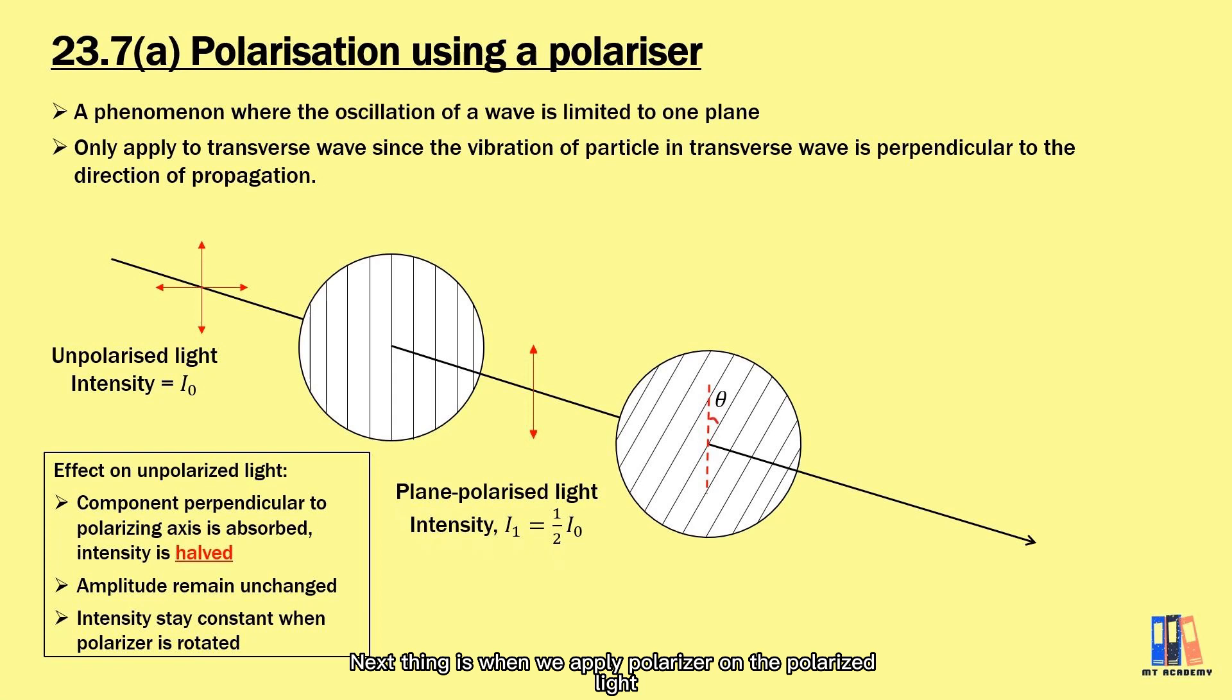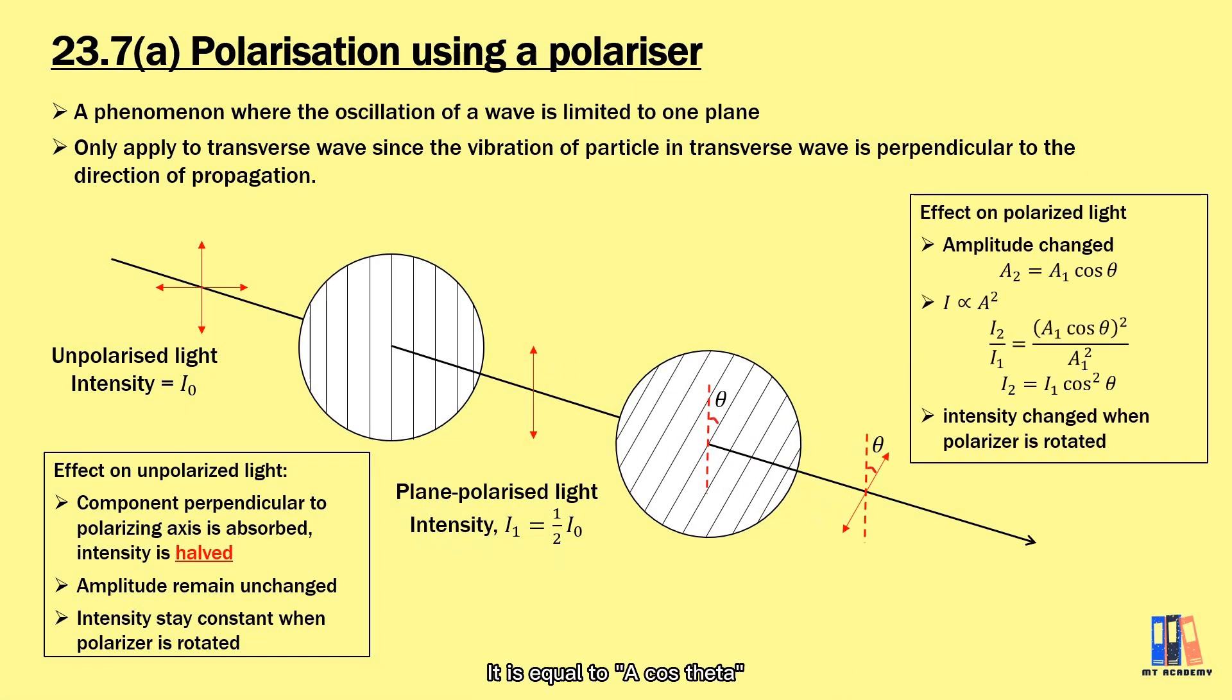Next is when we apply a polarizer on polarized light. Now the incident light to the second polarizer is vibrating in only one plane. The first effect is that the amplitude will change. It is equal to A cos θ which depends on the angle between the vibration of light and the polarizing axis. The intensity of light is proportional to the square of amplitude.